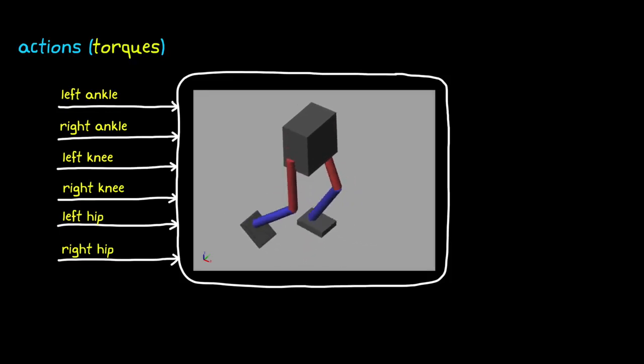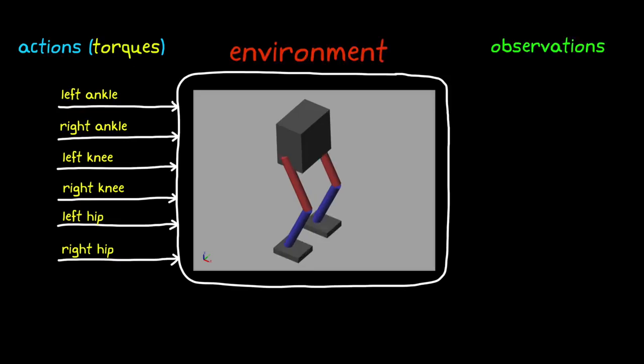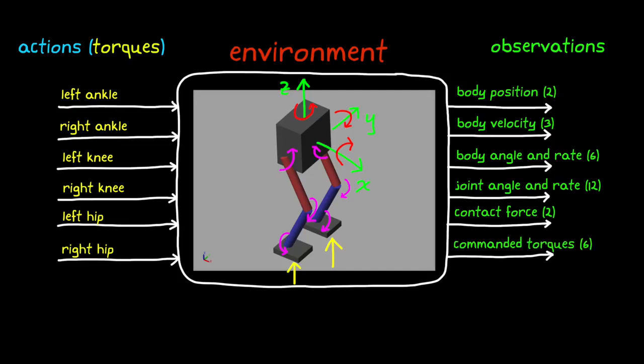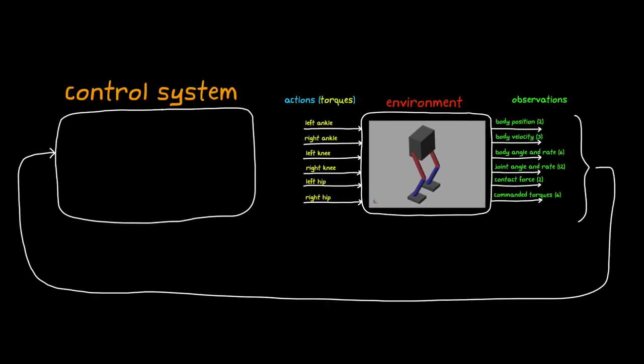Now the robot body and legs, along with the world in which it operates, makes up the environment. The observations from the environment are based on the type and locations of sensors, as well as any other data that is generated by the software. For this example, we're using 31 different observations. These are the Y and Z body positions, the X, Y, and Z body velocity, and the body orientation and angular rate. There are also the angles and angular rates of the six joints, and the contact forces between the feet and the ground. Those are the sensed observations. We're also feeding back the six actions that we commanded in the previous time step, which are stored in a buffer in software. So in all, our control system would need to take in these 31 observations and then calculate the values of the six motor torques continuously. So you can start to see how complex the logic has to be for even this really simple system.